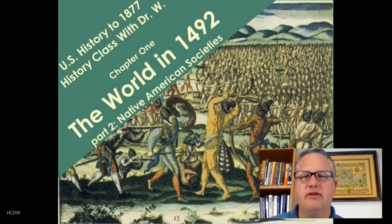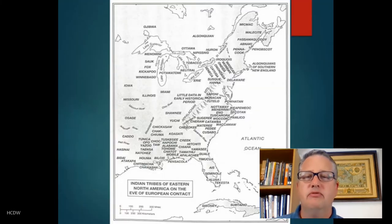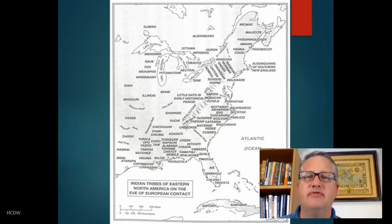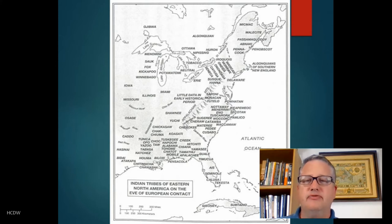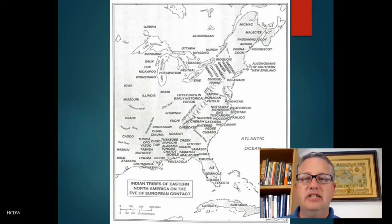Of course none of these things are true, and the reality is that as I mentioned in the previous lecture, the Americas were populated by a multitude of rich, diverse cultures on the eve of European settlement. As many as 2,000 different languages and 600 or so distinct societies existed at that time, many of them with varying degrees of highly developed civilization and culture to rival what we saw in Europe and other parts of the world at that time.